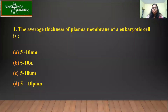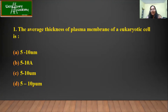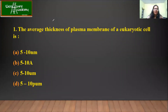So the first question. Here I'm going to discuss different types of questions which have come in the previous year's exams. Those questions will be discussed and the answers will be explained with logical reasoning. The first question is: the average thickness of the plasma membrane of a eukaryotic cell is what? Even if you don't remember the answer, that's okay.